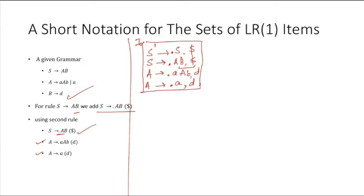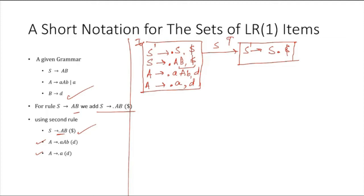So we have the item set I0. Now for capital A we will have a move, and we get S' to capital-A dot with lookahead dollar. Nothing else is added because after the dot there is nothing. This is I1, and for dollar the move will be to accept.